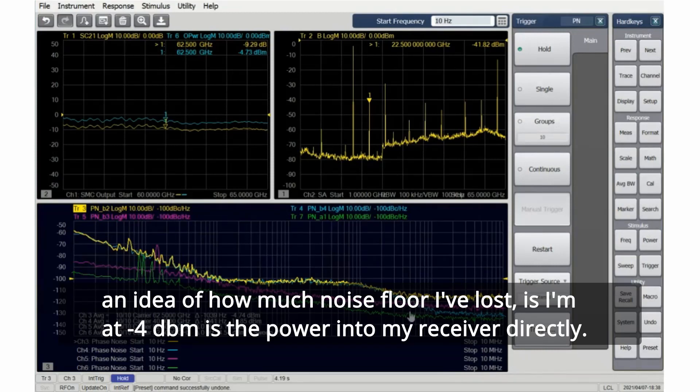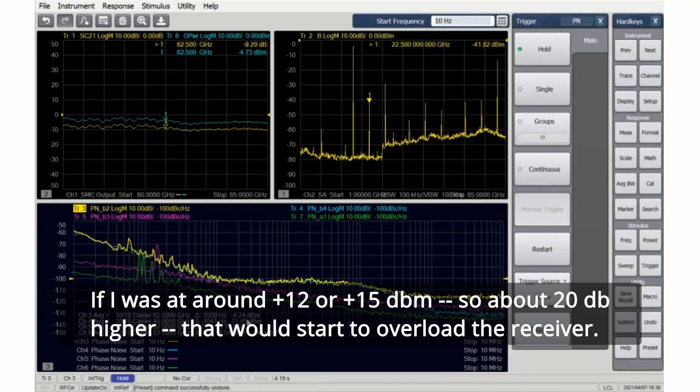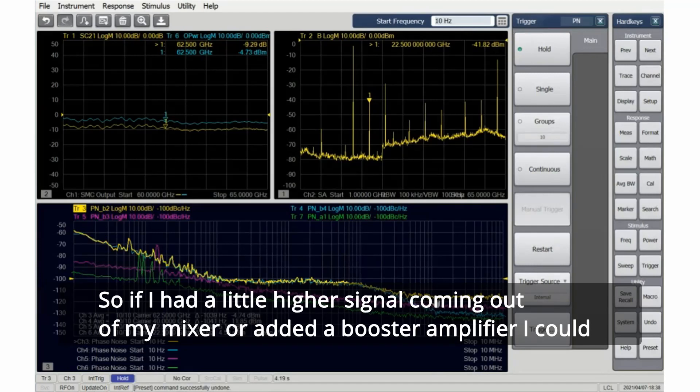If I was at around plus 12 or plus 15 dBm - so about 20 dB higher - that would start to overload the receiver. So if I had a little higher signal coming out of my mixer or added a booster amplifier, I could probably drive this down another 20 dB.